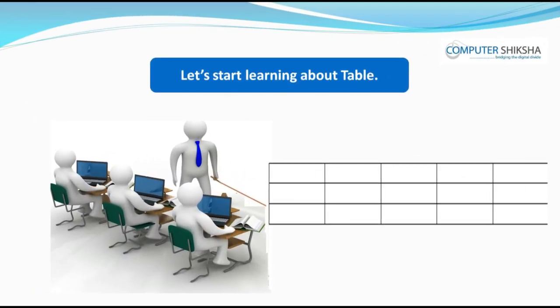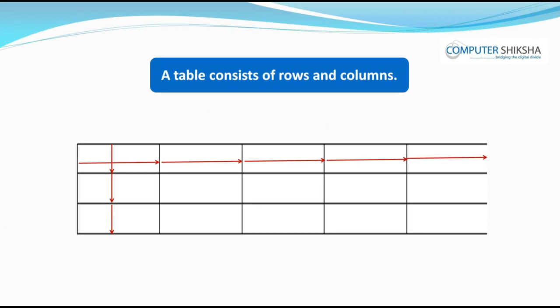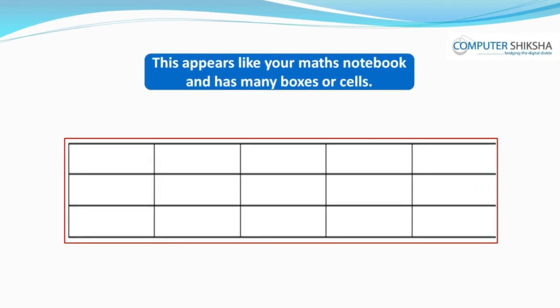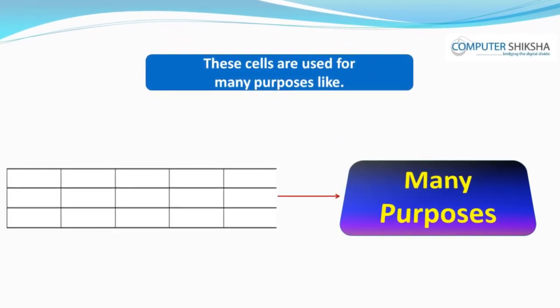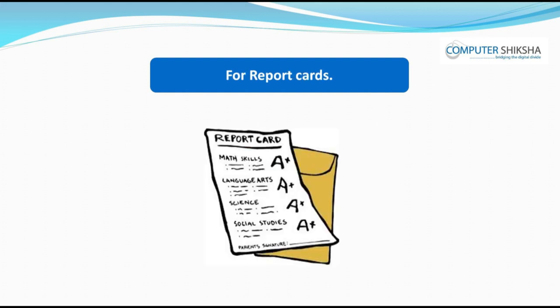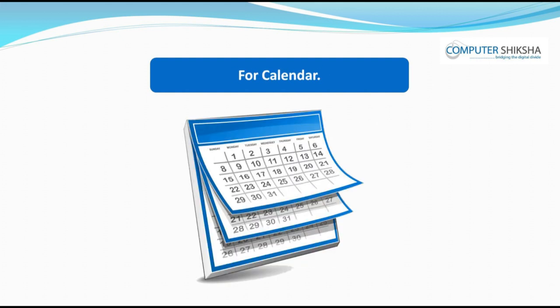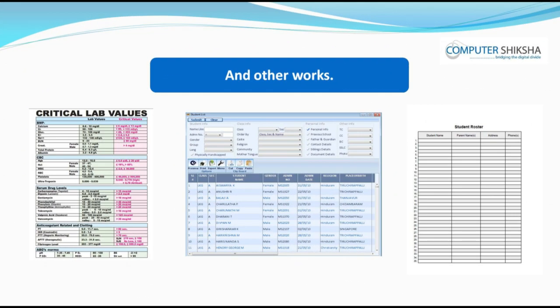Let us start learning about the table. Do you know what is a table and why do we use it? A table consists of rows and columns. This appears like your maths notebook and has many boxes or cells. These cells are used for many purposes like for making lists, for office work, for report cards, for calendars, and for students' marks or other details.